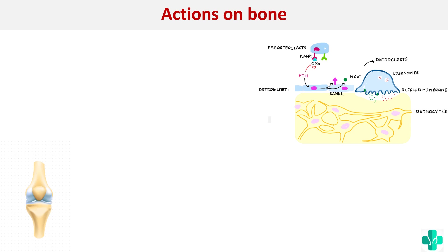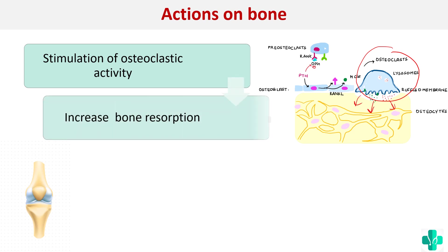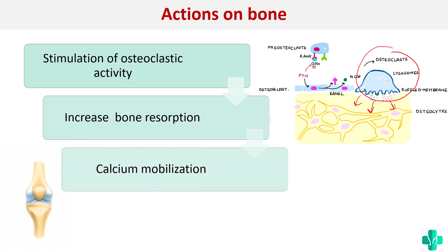On the bone, parathormone mainly acts to stimulate osteoclastic activity. Osteoclasts are cells that cause bone resorption. This causes bone resorption and thereby increases the level of calcium, because more calcium is mobilized from the bone.